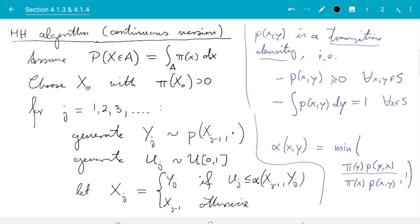Here is what we wrote in the previous video. We are now given the target distribution in form of a density, so that pi is the density and we want to generate a Markov chain with stationary distribution pi.